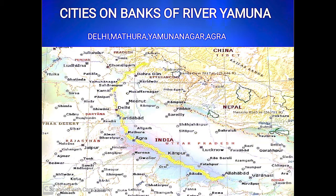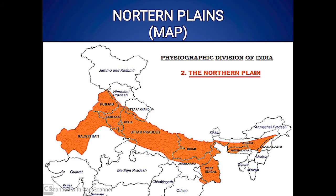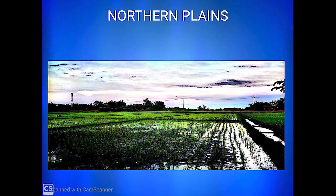Rivers play an important role in the formation of plains. These plains are made up of soil brought by rivers. The northern plains of India are the best example of this. The northern plains of Haryana, Punjab, Uttar Pradesh, and Bihar are flat and fertile due to the soil brought by rivers like Indus, Ganga, and their tributaries. These plains are the most suitable places for farmers.